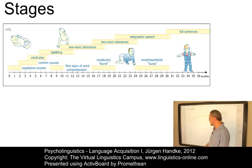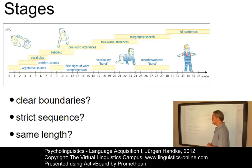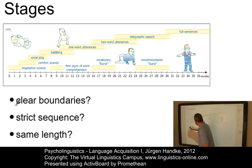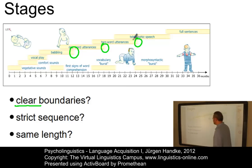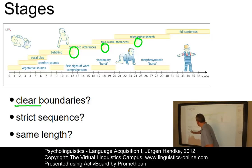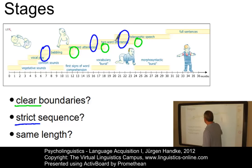Several things are worth noting about these stages. The first question concerns the boundaries between these stages — it is relatively clear that they have no clear boundaries, as indicated by the fading edges. The second question concerns the sequential character of these stages of language acquisition, and it is relatively clear that they do not occur in a strict sequence, but overlap to some extent.